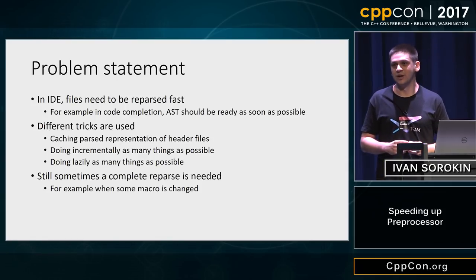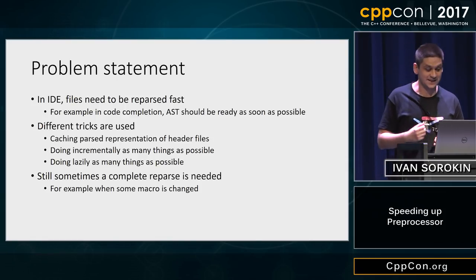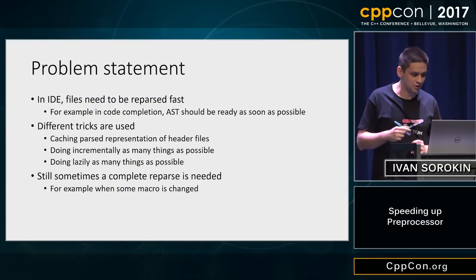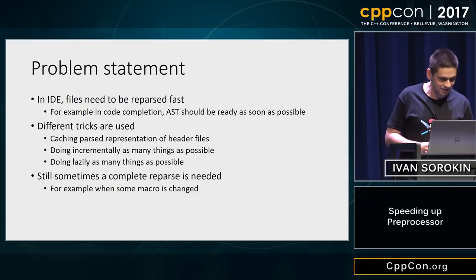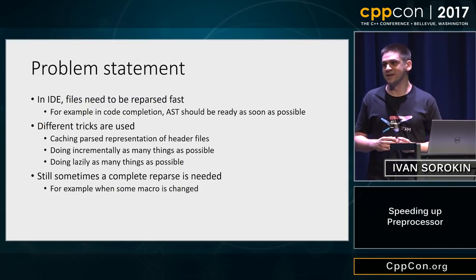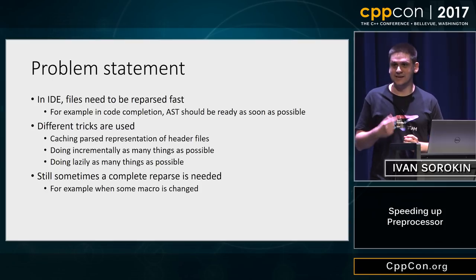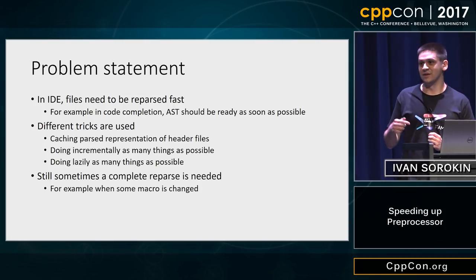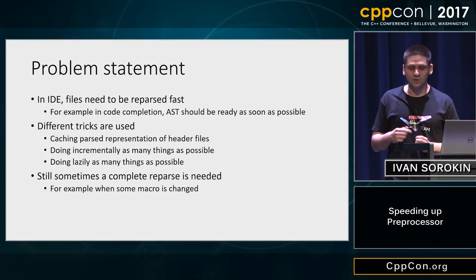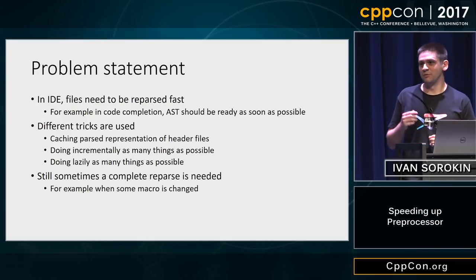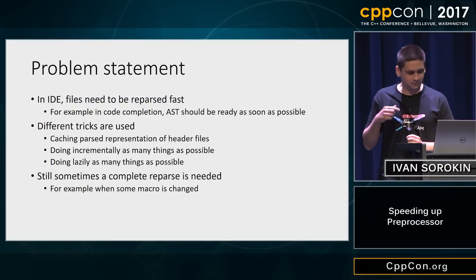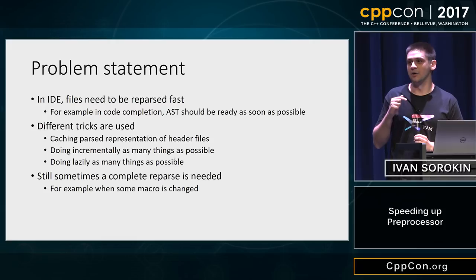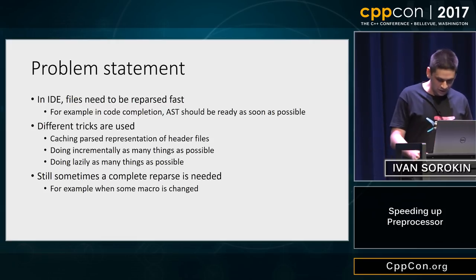For example, we cache as many things as possible in order to not recompute them at each reparse. Also, for some edits, we update the existing AST incrementally without discarding the old one and building a new one. And also, we defer some computations in the hope that we won't need them at all.